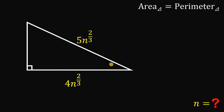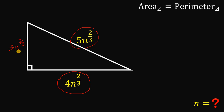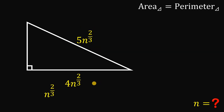So, given this right triangle, one leg is equal to 4 times n raised to 2/3, and the hypotenuse equals 5 times n raised to 2/3. By observation, the third side must be equal to 3 multiplied by n raised to 2/3, since we have a 3-4-5 right triangle. Now, this expression n raised to 2/3 is very annoying, so let's replace it with another variable s.